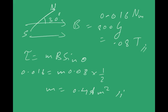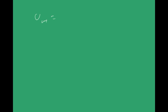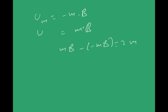The work done in moving the dipole from its most stable position (θ = 0°, U = −mB) to its most unstable position (θ = 180°, U = +mB) is W = mB − (−mB) = 2mB = 2 × 0.4 × 0.08 = 0.064 J.